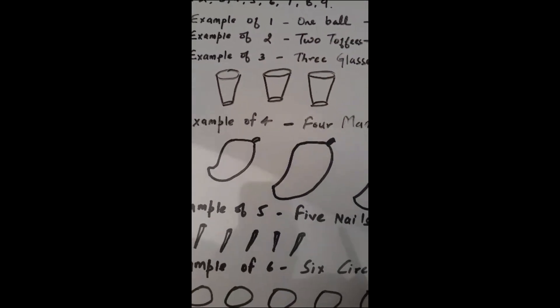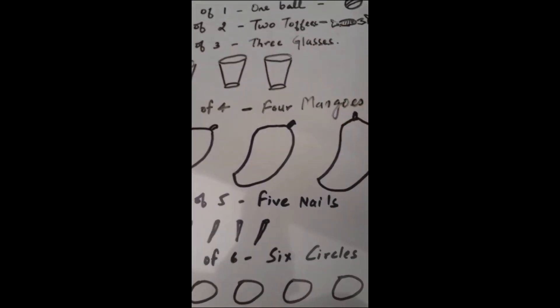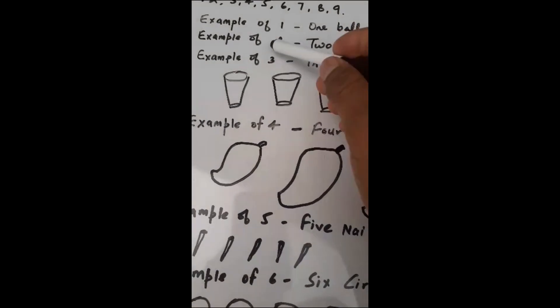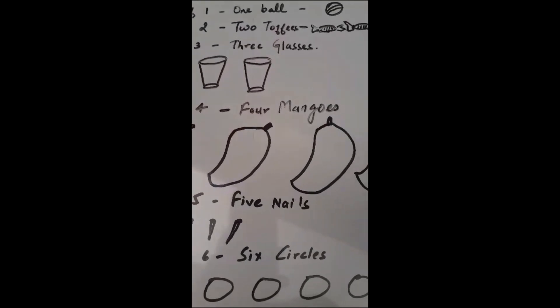Then example of 1, if you see it is 1 ball, we have drawn 1 ball. Then example of 2, it is 2 toffees, there are 2 toffees, so we have written 2 toffees.